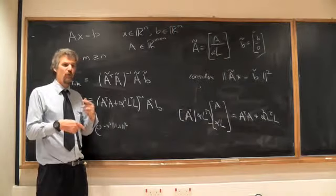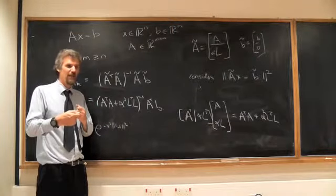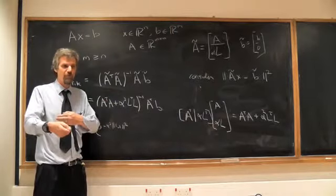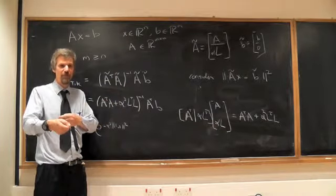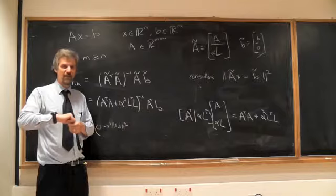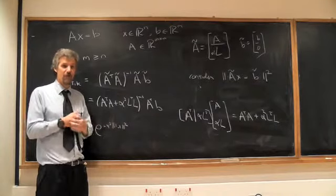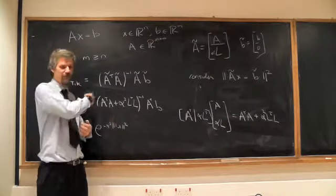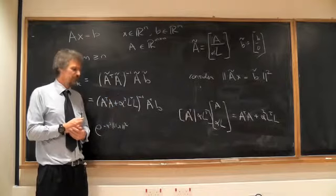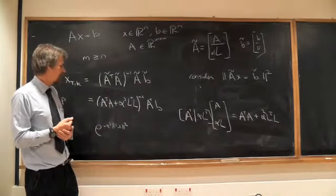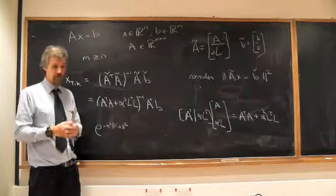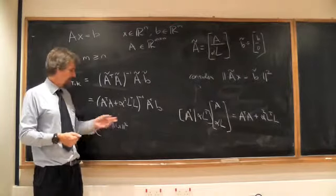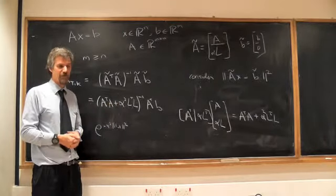You update the conductivity. If you want to do another step, recalculate the forward problem solution, compare the voltages again, update the conductivity again, you have to recalculate the Jacobian, and then resolve this system. So you can think of that as a regularized version of Newton's method, where you solve the regularized problem at each linear step.